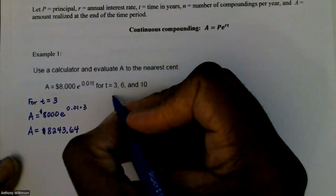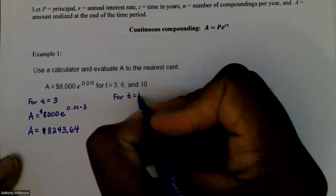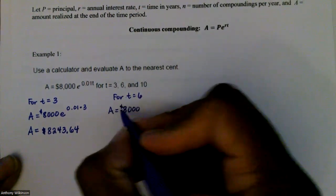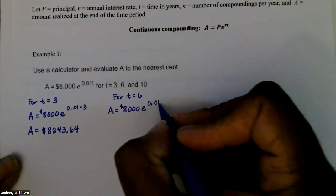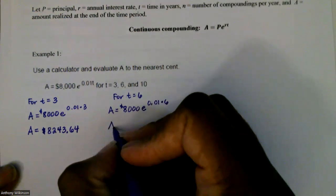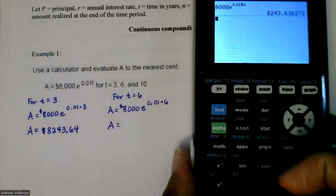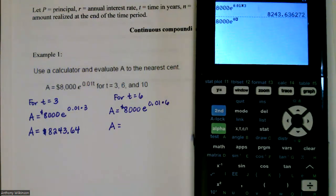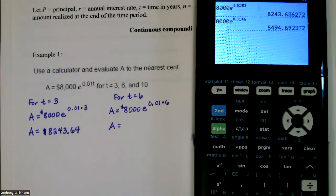Now for T equal to 6, using that same formula A equal to $8,000 times e to the 0.01 times T, T this time is 6. On the calculator, type 8,000, then 2nd and LN for the e, then 0.01 times 6. Rounded to 2 decimal places, that would be $8,494.69.